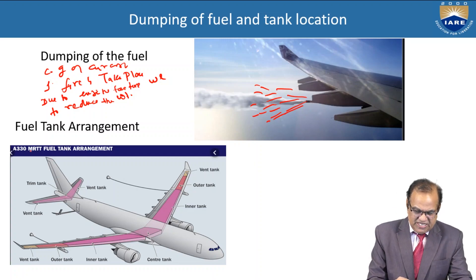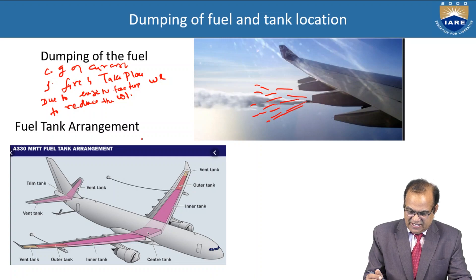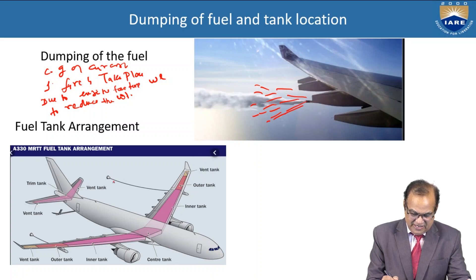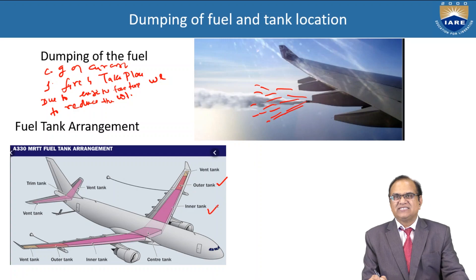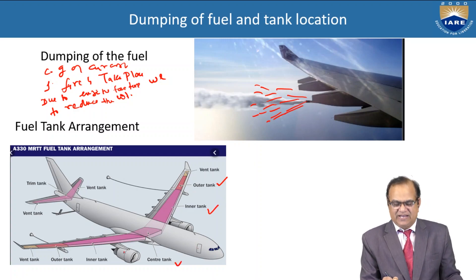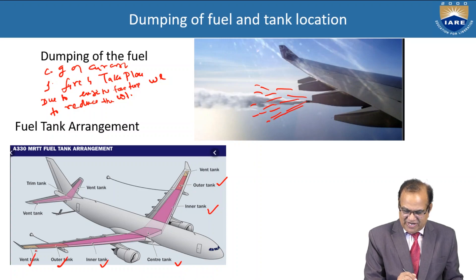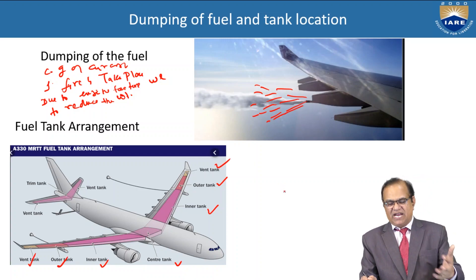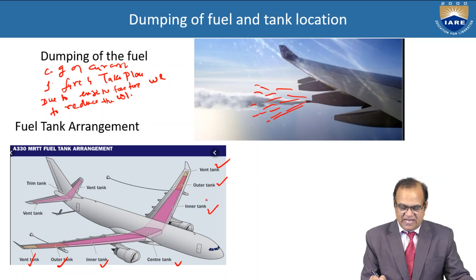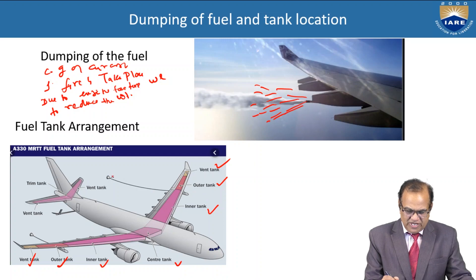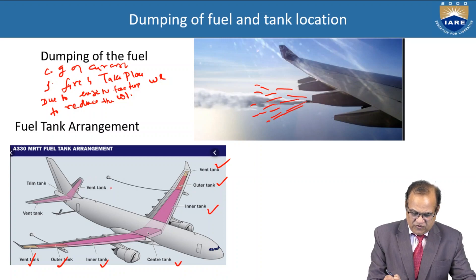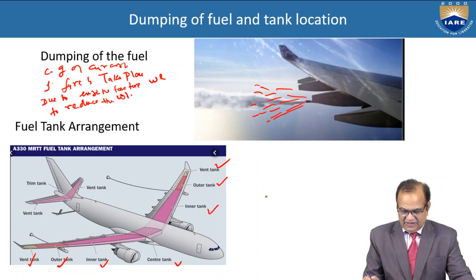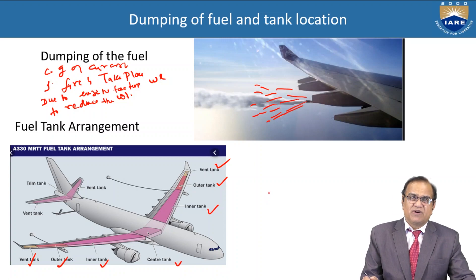In this diagram it is the A330 MRTT fuel tank arrangement. The pink color represents the fuel tanks. From outside inward: outer tank, inner tank, center tank, inner tank, outer tank, and the wing tank — on both left and right sides. In the horizontal tail we also have a fuel tank — one called the wing tank and another called the trim tank.